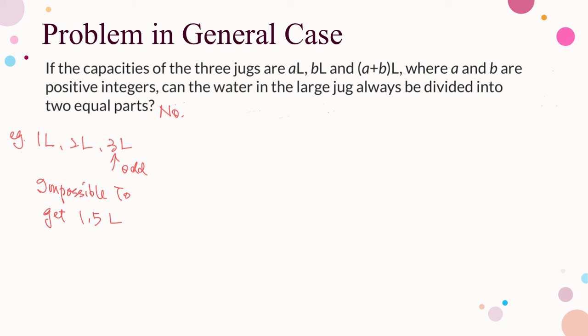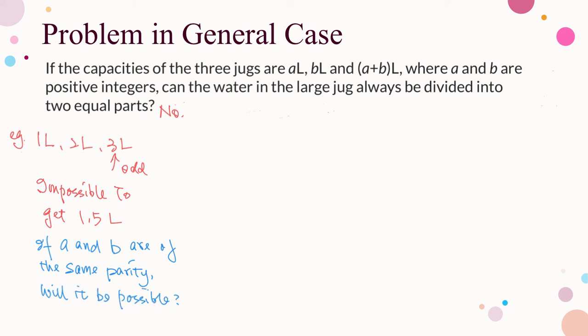Then, for what values of a and b is the answer positive? We have seen from the counterexample that if a plus b is odd — that is, a and b are of different parity — then it is impossible to divide the water equally into two parts. Can we say that if a and b are of the same parity, that is, both even or both odd, then the target is always reached? Again, the answer is negative.